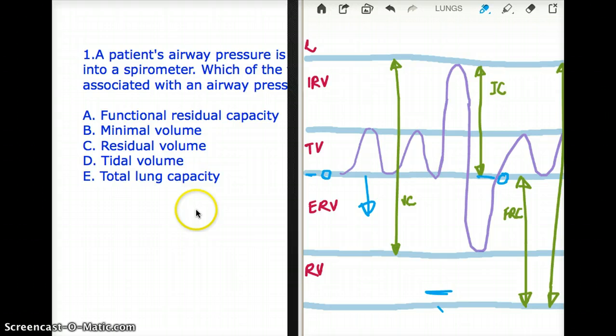Last of all we have the total lung capacity. That is the only one where we can see that it can create a positive pressure. So in this case, total lung capacity is the right answer because that's the only one which can create a positive pressure which is being measured in the spirometer.